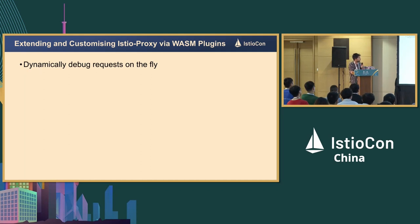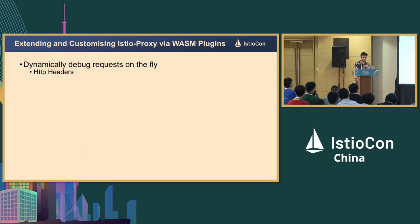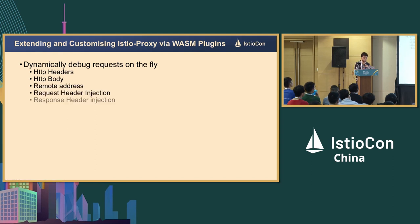Let's talk about some use cases. One use case is dynamically debugging your request on the fly. In that case, you may want to see some HTTP headers — what are the headers in your request at a given moment — maybe the HTTP body, the remote address, and you may want to inject some headers in the request or response. Basically, you're doing header manipulation.